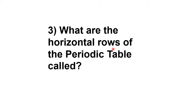Question three: What are the horizontal rows of the periodic table called? As I just mentioned, horizontal rows are called periods. The total number of periods as of now is seven, and the seventh period is incomplete — it will be filled after the discovery of more elements in the future.